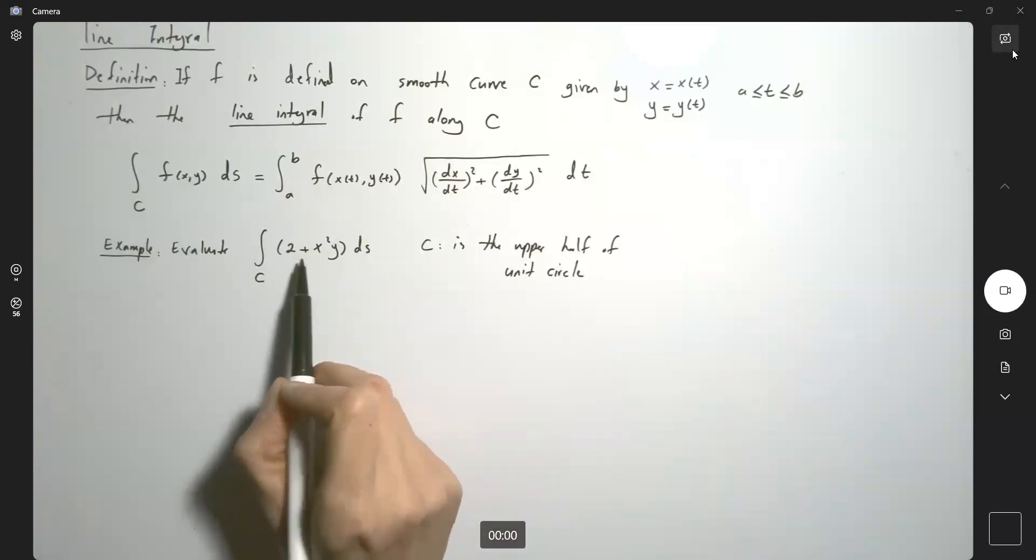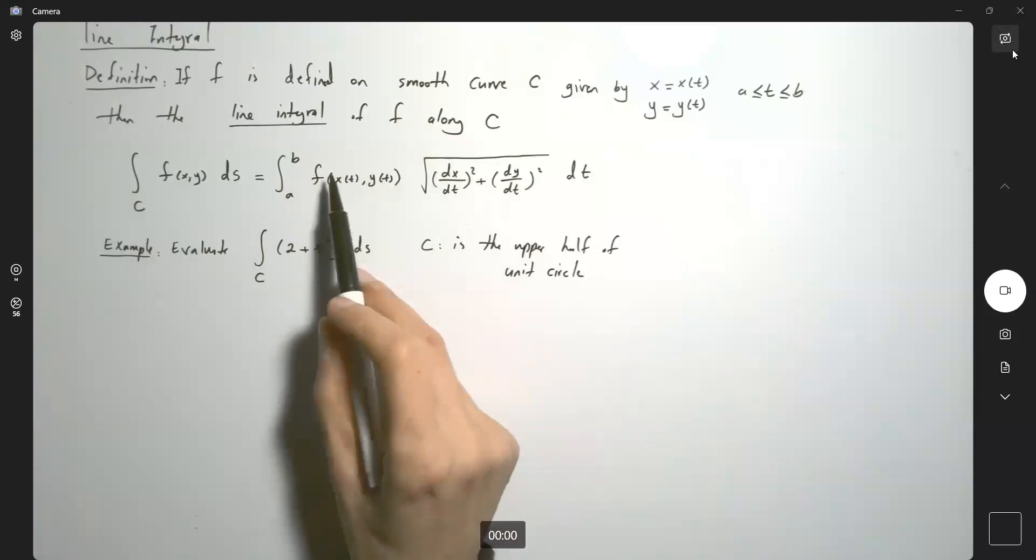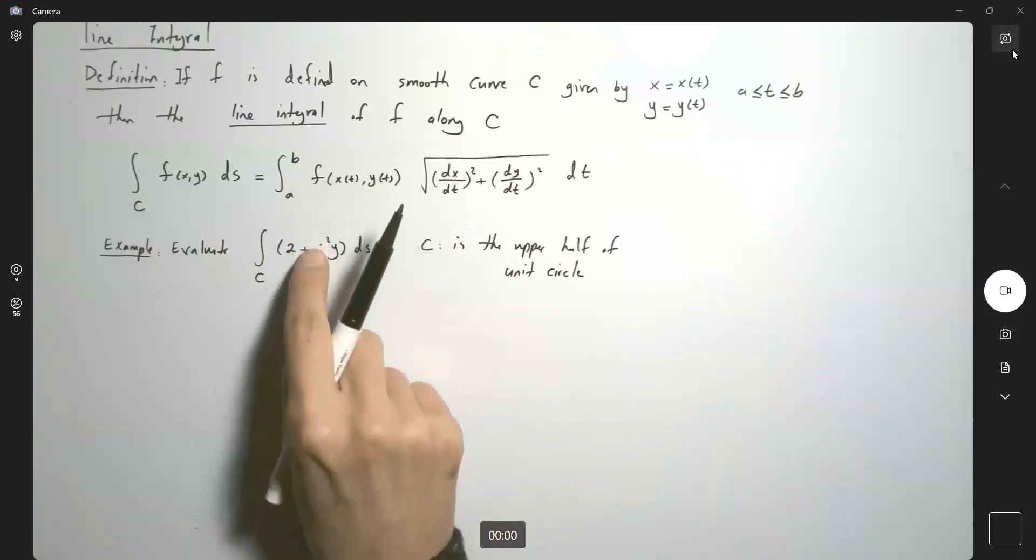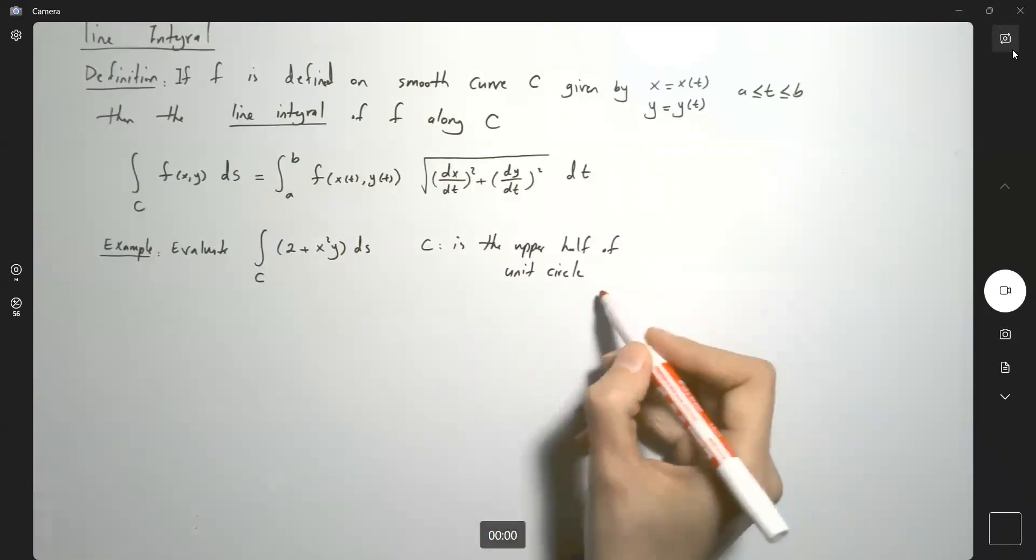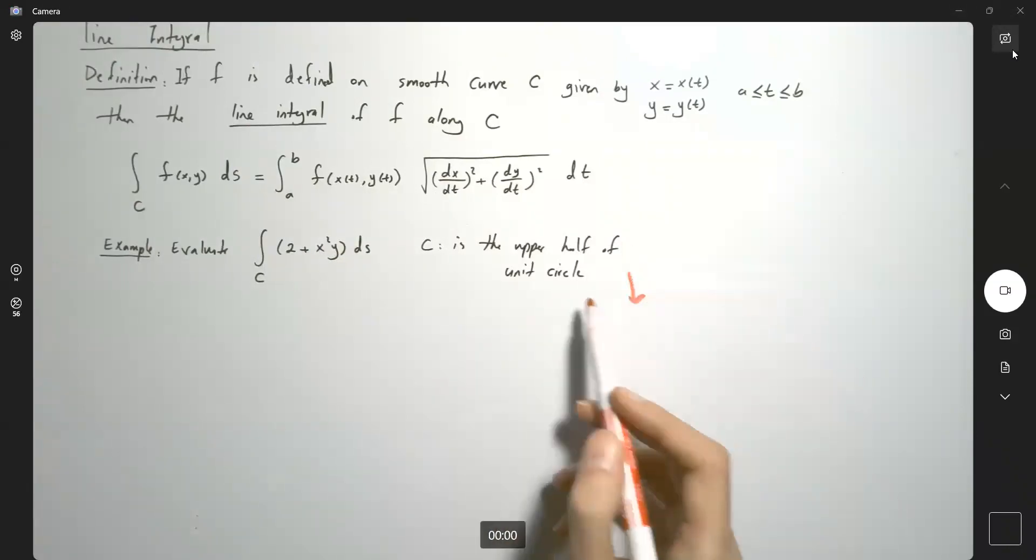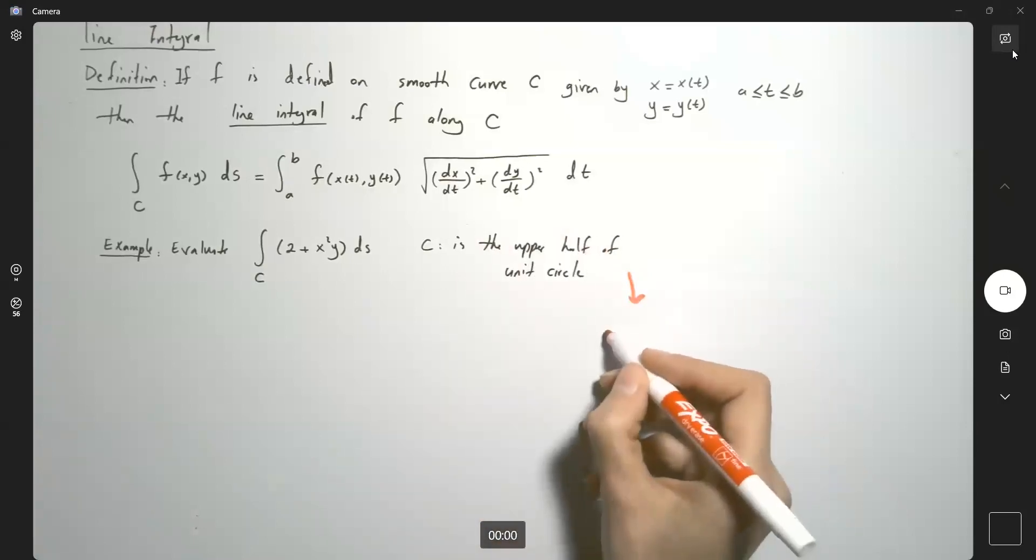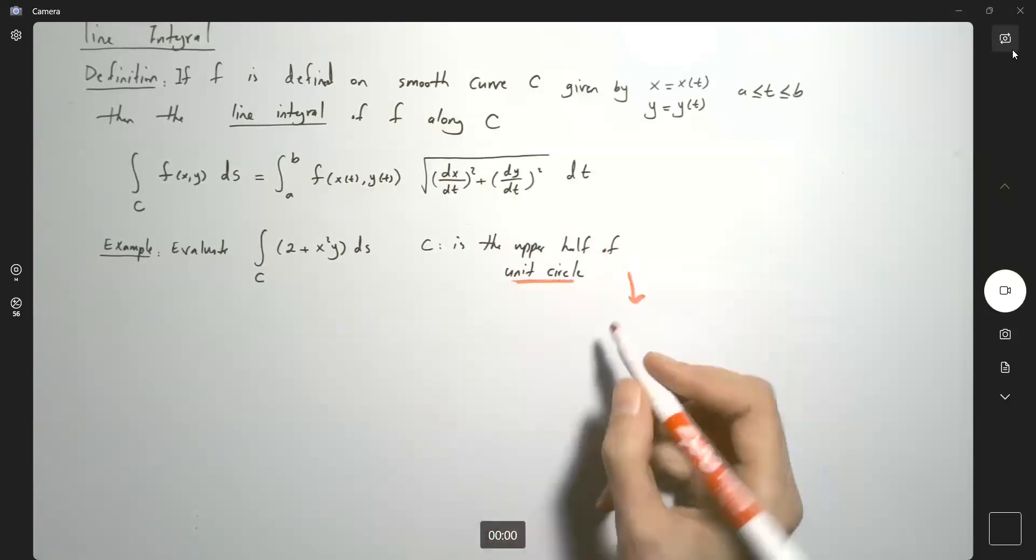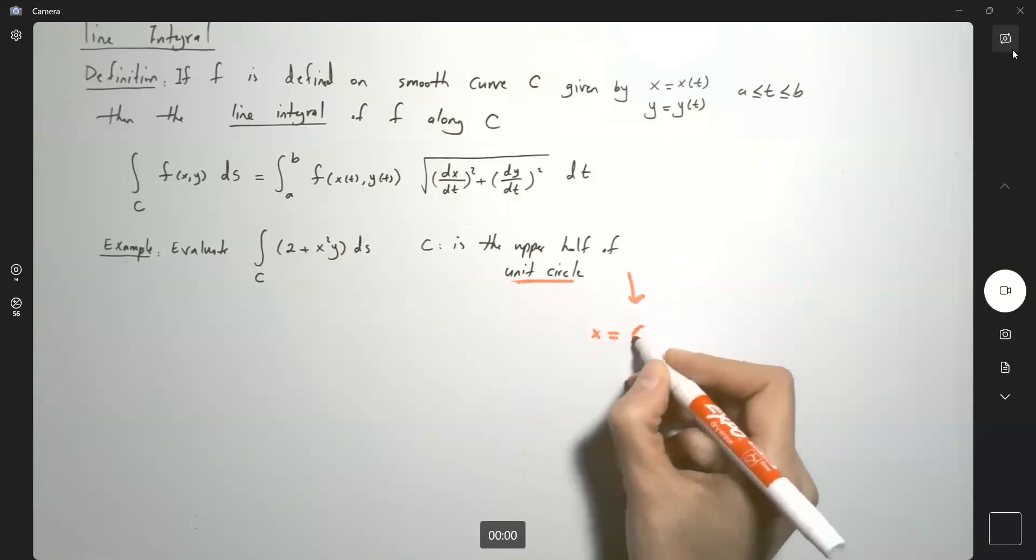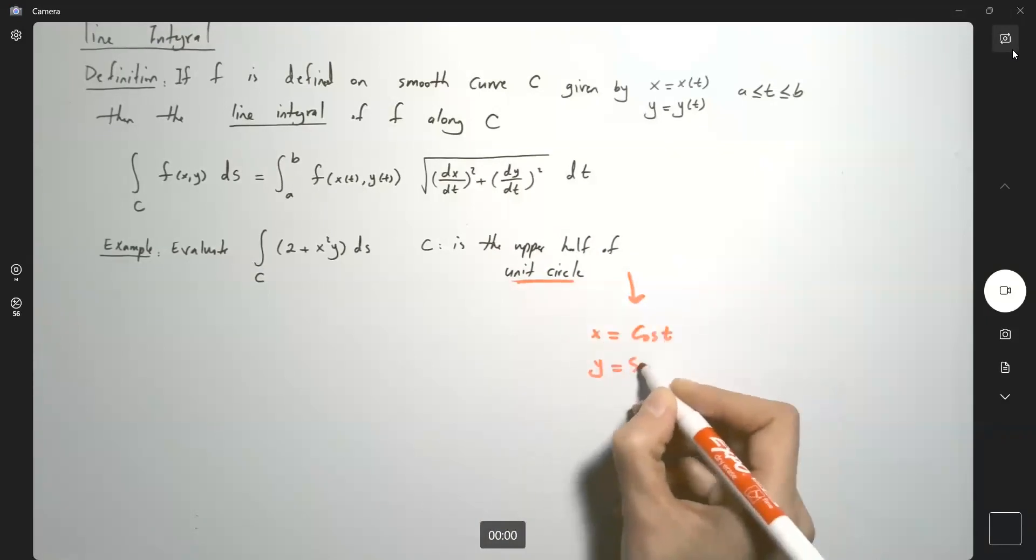We need to convert x and y into functions of t: x(t), y(t). Since C is part of a circle, we use polar coordinates. For a unit circle, x equals cosine t and y equals sine t.